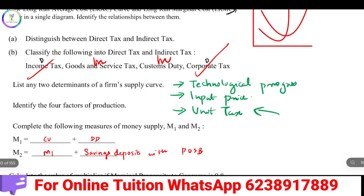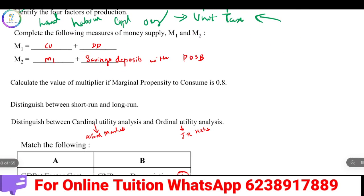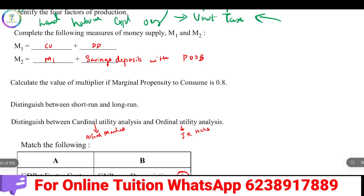Identify the four factors of production: Land, Labour, Capital, and Organisation. For money supply: M1 equals Currency with the public plus Demand Deposits. M2 equals M1 plus savings deposits with the Post Office Savings Bank. M3 and M4 will be complete from there.